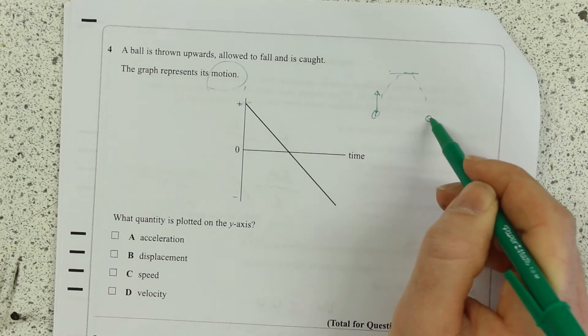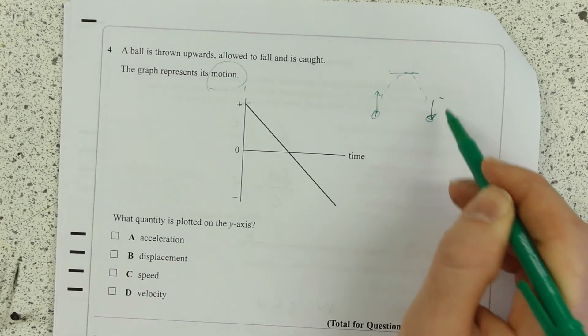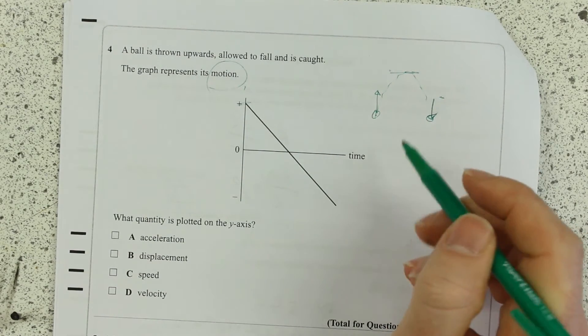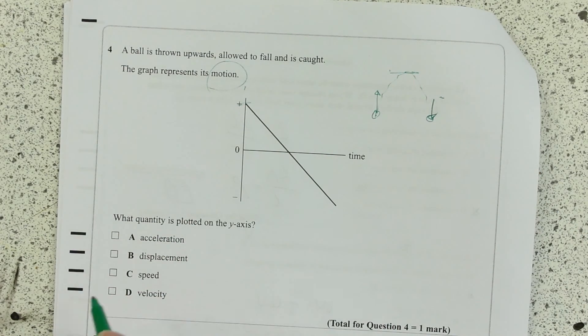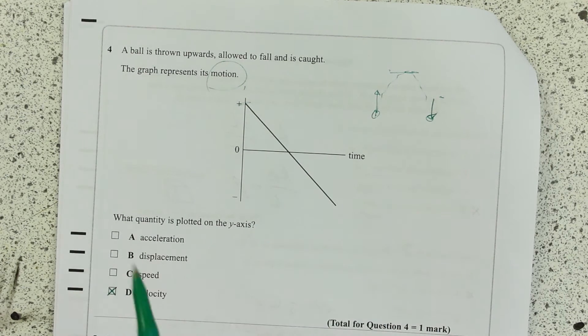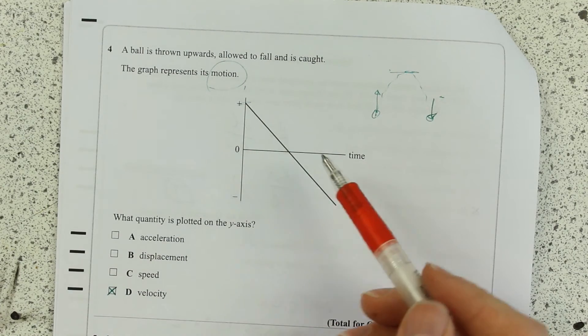gets to zero velocity at the top, and then it's a high negative velocity at the end. So what quantity is on the y-axis? It's velocity. I think this is just lots of practice recognizing different situations.